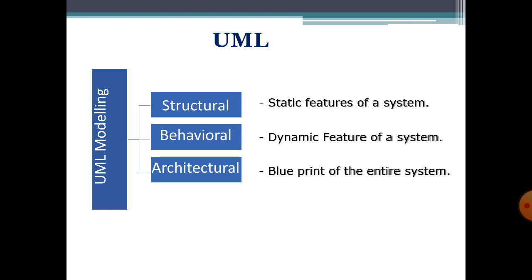Now the formal technical discussion of UML begins. Basically, UML is divided into two categories: the first one is structural and the second one is behavioral. The structural aspects of software modeling give us a static view of the system or static features, while the behavioral aspect of the system gives us a dynamic feature and tells us how the system will perform in real time or at run time.